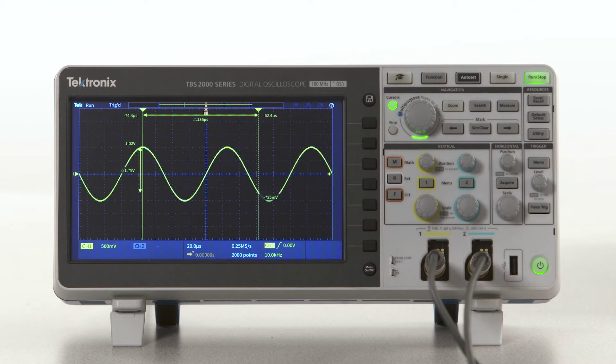In the previous video, we measured time and amplitude characteristics using oscilloscope graticule and cursors. These visual measurement techniques provide great estimates of voltage and time. However, their accuracy is limited by graticule resolution, cursor alignment, and display resolution.